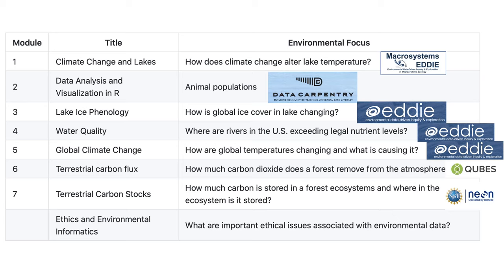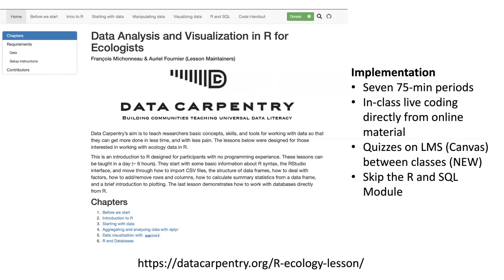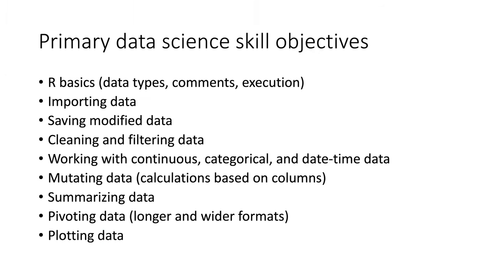Module two uses the Data Carpentry resources, which is an excellent resource for teaching the basics of data science in R using an ecological dataset. The data science skills that this module helps build up are R basics, data types, comments, execution, importing data, saving modified data, cleaning and filtering data, working with continuous categorical and date-time data, mutating data — which is calculations based on columns — summarizing data, pivoting data from longer to wider formats, and plotting data.